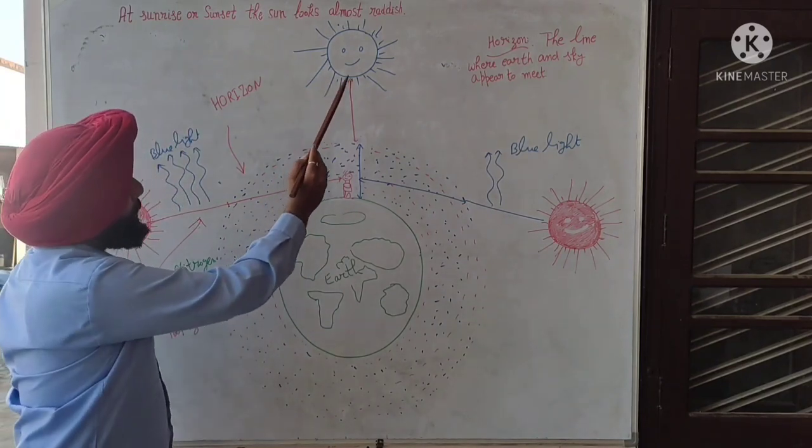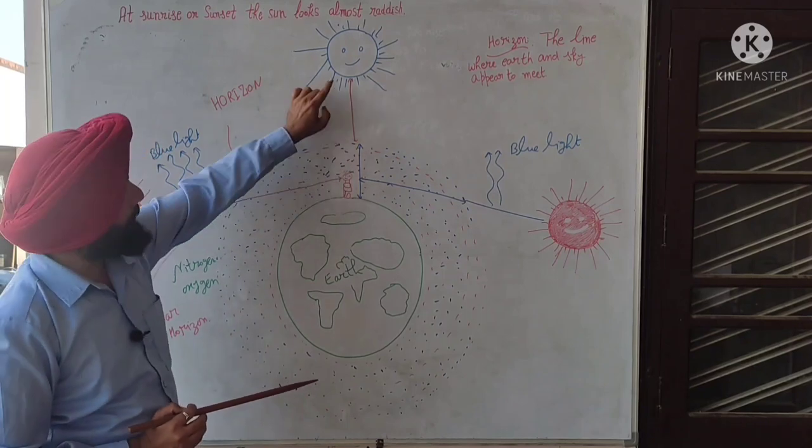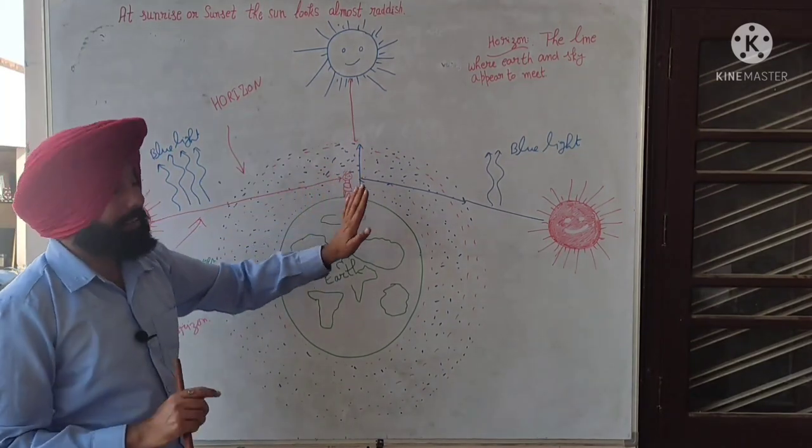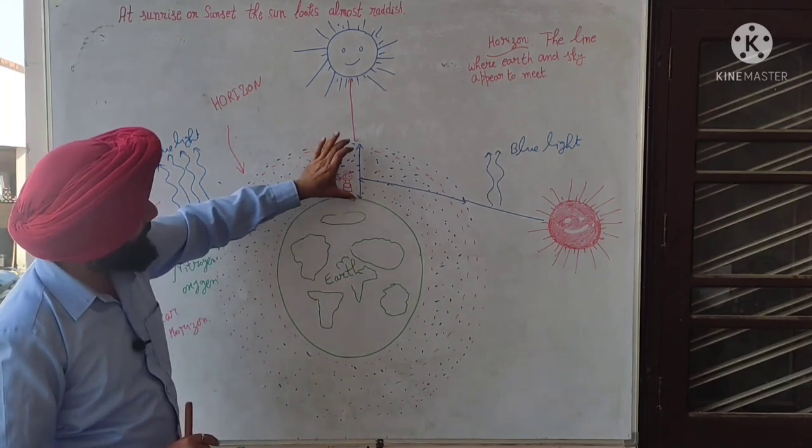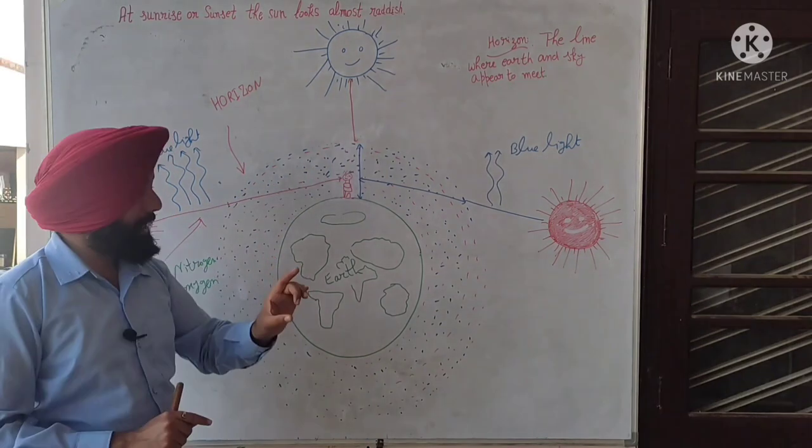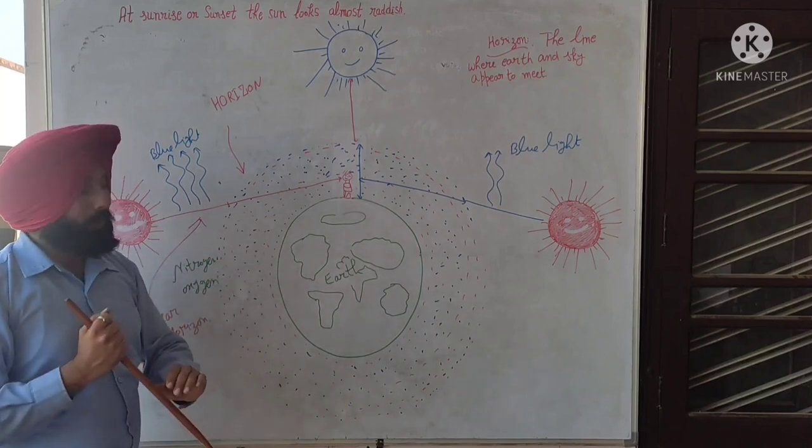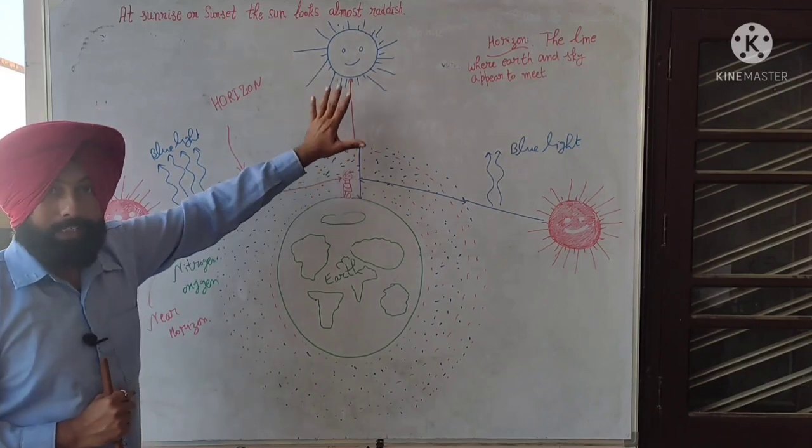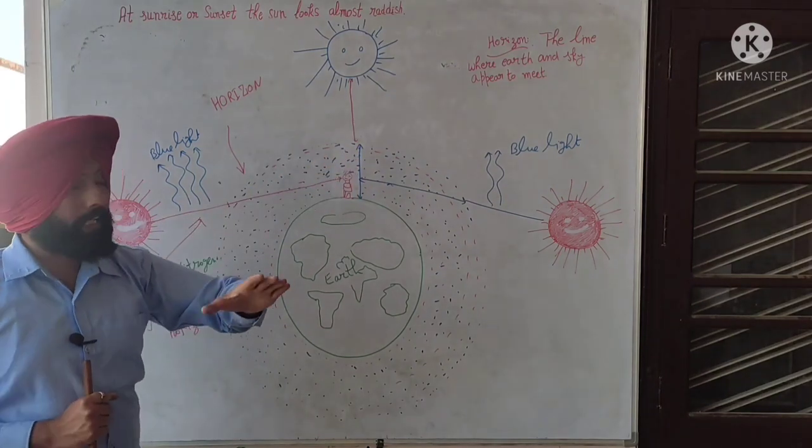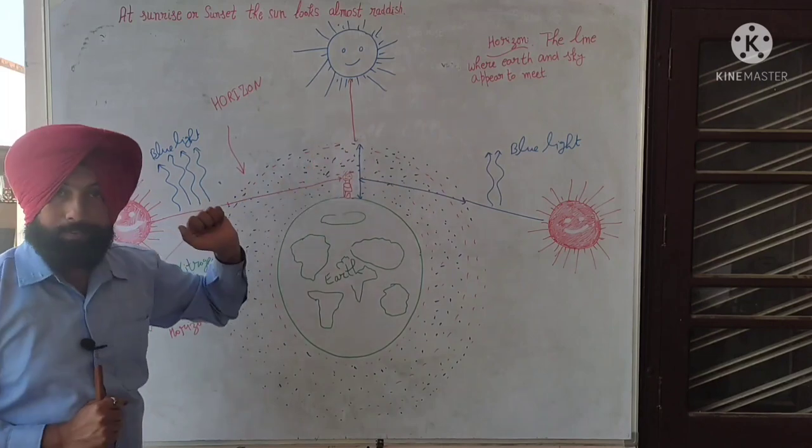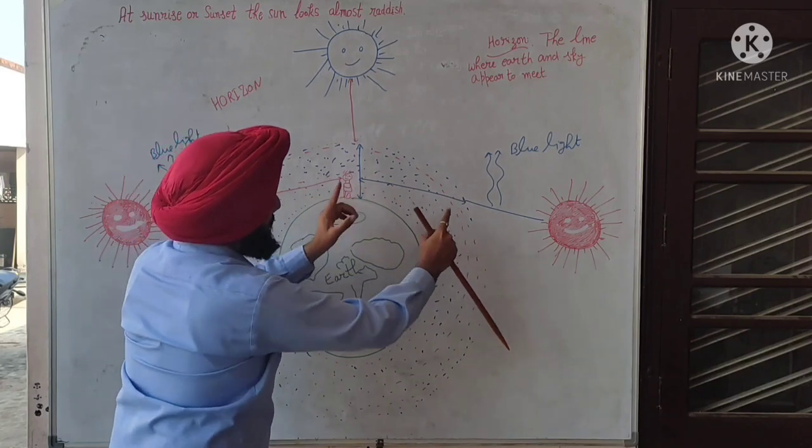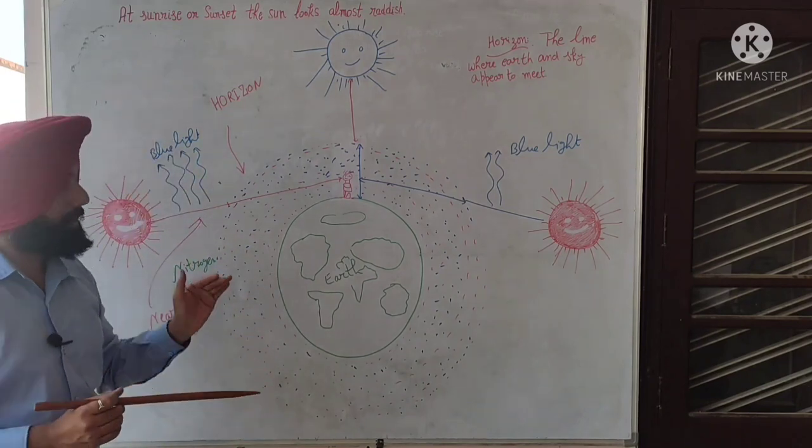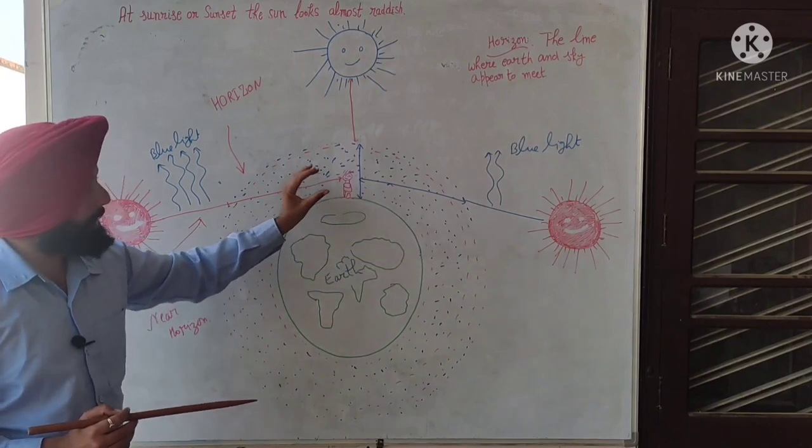But at the time of noon, the light beams coming to our eyes enter with less scattering because this distance is less as compared to the horizon. The distance is less, so the sun's light that enters is scattered less for the observer.